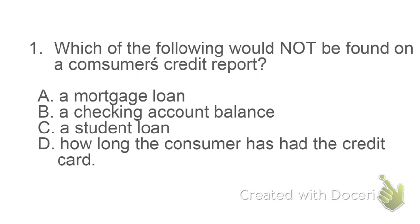Number one: which of the following would not be found on a consumer's credit report? Your credit report is this fancy document that the bank uses that tells how financially responsible you are. There are some things that are on there and some things involving your money that are not on there. Your mortgage loan — that's your house payment. When you borrow money from a bank to buy a house, that is called your mortgage. So the amount of money that you owe the bank for your house, it is on there.